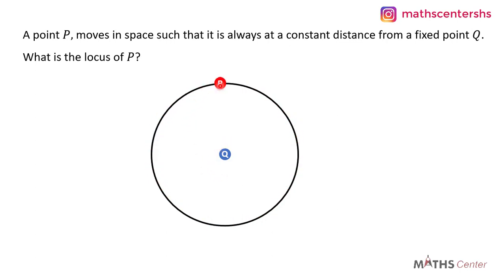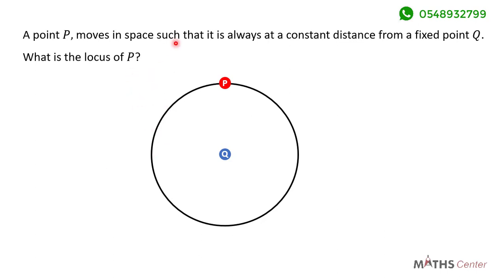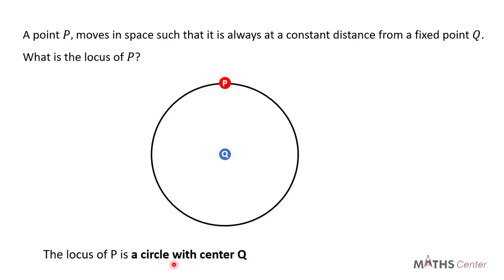So if point P moves around point K in a circular path with point K at the center, as we can see from the diagram, the distance between point P and point K at any moment will be the radius of the circle, and that will be constant throughout the movement of point P. Therefore, the locus of point P is a circle with point K at the center.